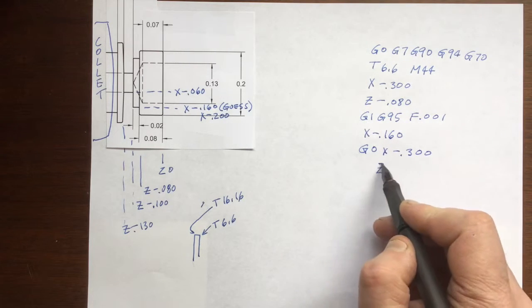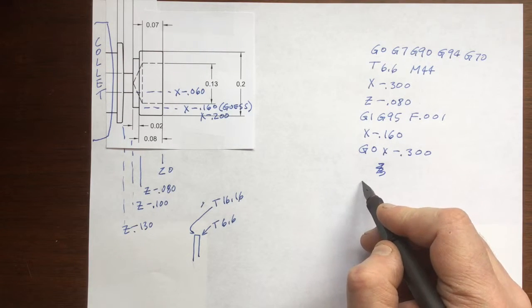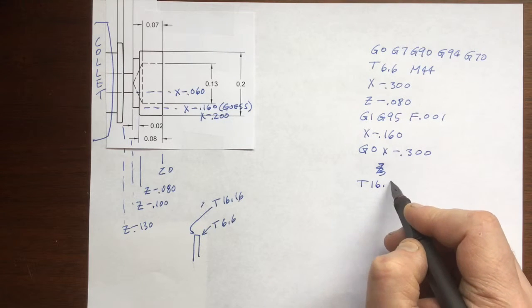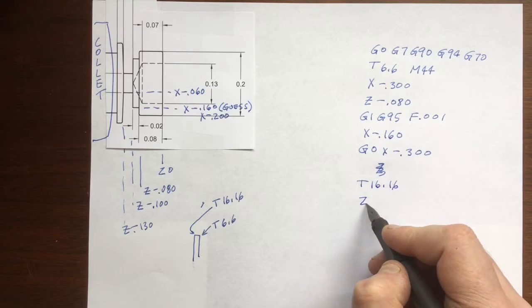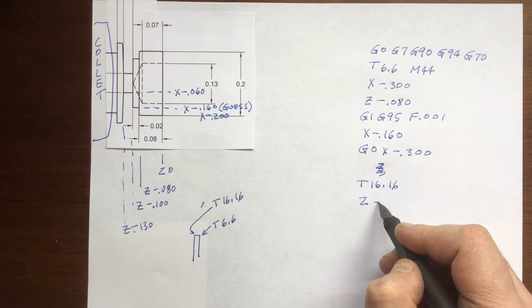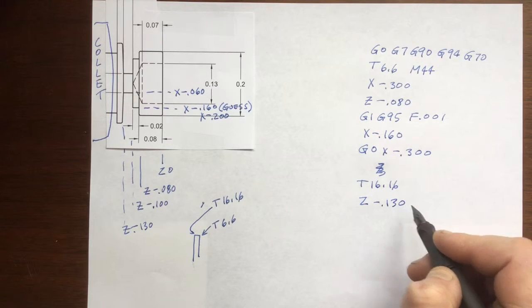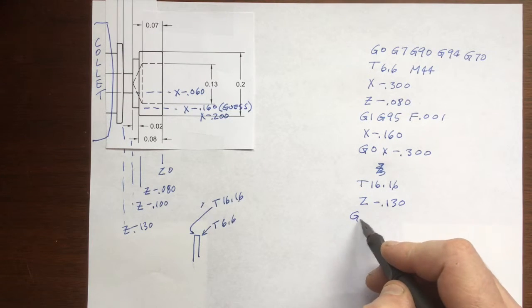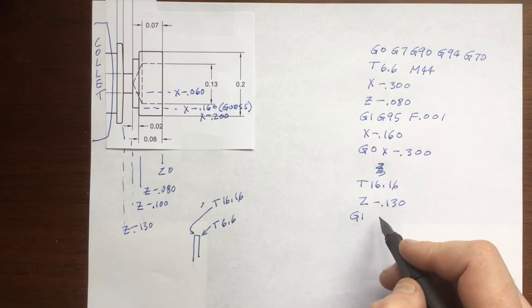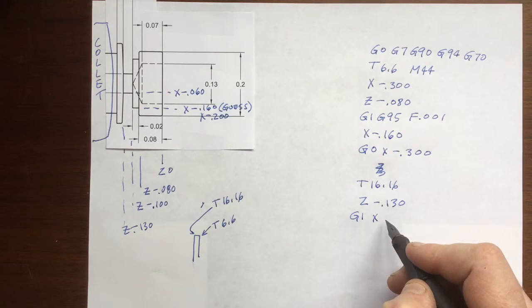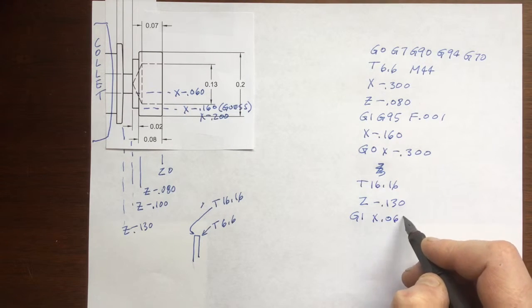I'm done with tool 6 so I'm going to change to tool 16.16. Rapid travel is still in force. We have to remember to turn G1 back on for feed rate for the next groove. I'm also going to reduce the feed rate.